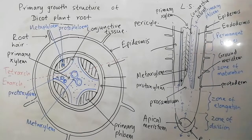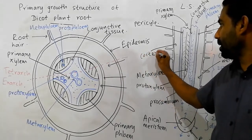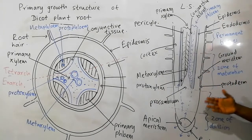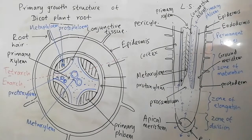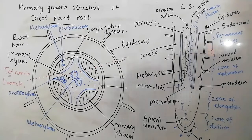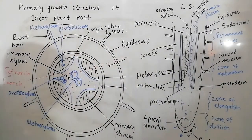Copy this longitudinal section diagram onto your notes and label all parts including protophloem and metaphloem. You can pause the video and draw the diagram in the appropriate place.